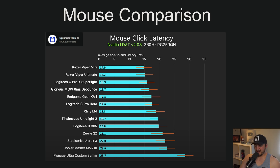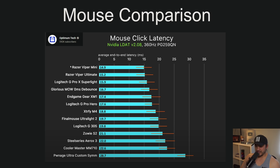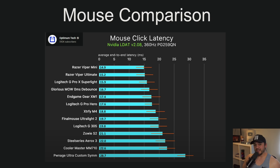I just switched over to the G Pro X Superlight, which is the third fastest mouse on his list — I didn't even know that when I bought it. It doesn't matter if you're wired or wireless. One thing I do want to talk about is DPI, which is something so many people get wrong, and I'm going to try to dispel that in this video.